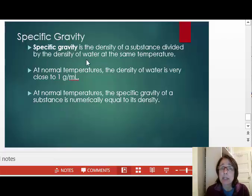Specific gravity is the density of a substance divided by the density of water at the same temperature. At normal temperatures, the density of water is very close to one gram per milliliter. Thus, at ambient temperatures, the specific gravity of a substance is numerically equal to its density.